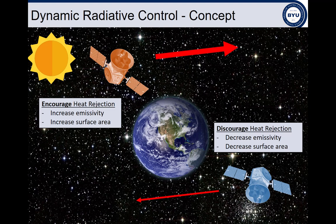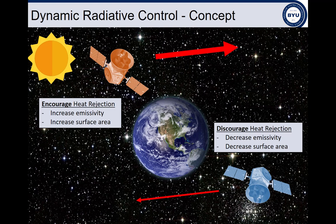So that brings us to the idea of dynamic radiative control or real-time variation of surface radiative properties or participating radiative area. During scenarios with large waste heat loads, we want to encourage heat rejection by increasing emissivity or increasing surface area. Conversely, when in the presence of small waste heat loads, emissivity and surface area would be decreased. This could lead to an ideal power savings of almost 90% when in survival heating mode.